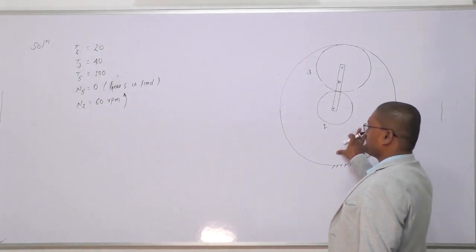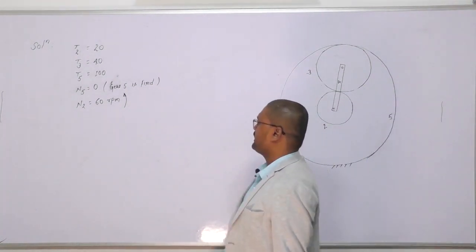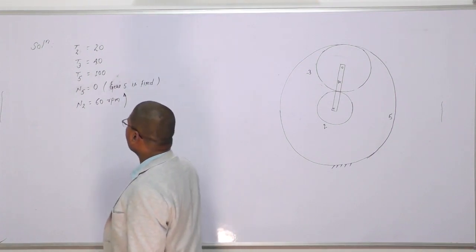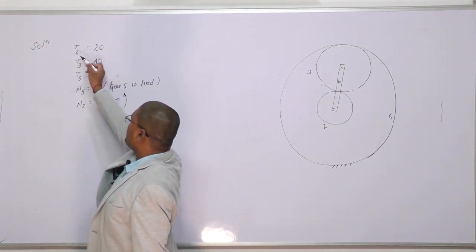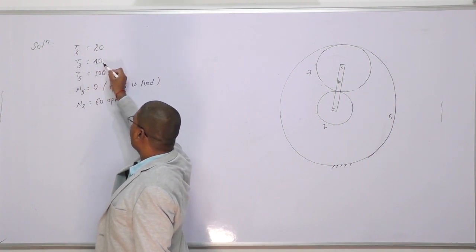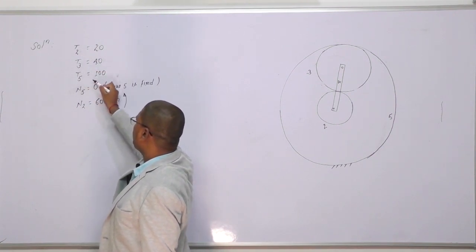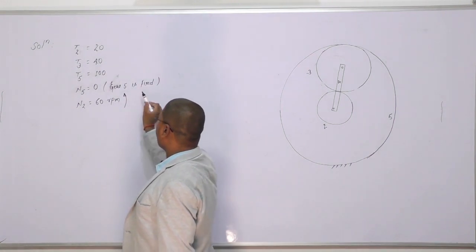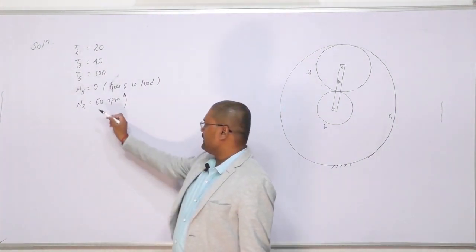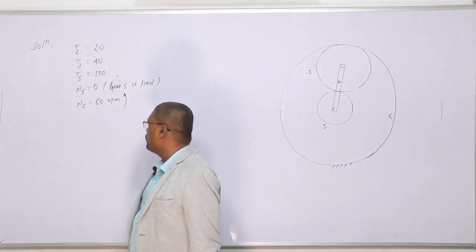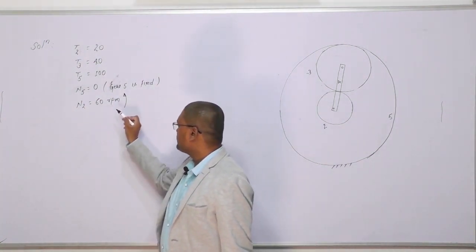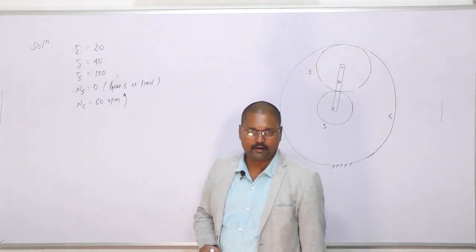After drawing the picture of the epicyclic gear train, first we write the information given in the problem. Teeth on gear 2 is 20, on gear 3 is 40, on gear 5 is 100, and gear 5 is fixed. So its speed will be 0, and the speed of gear 2 is 60 rpm counterclockwise direction.